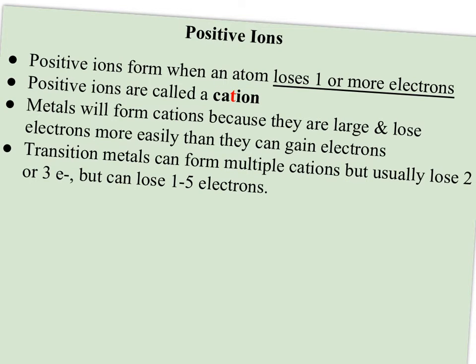So transition metals have the option of forming different kinds of cations because they could lose two or three electrons, or as few as one. So they've got a lot more options. But the representative metals in families 1A, 2A, and 3A, we know they're going to lose just one, two, and three electrons to get that noble gas type configuration.